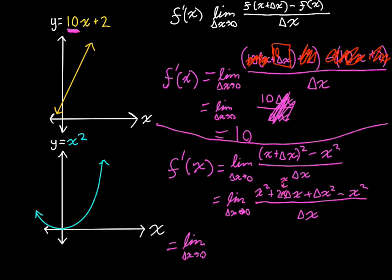But that's going to be the limit as delta x approaches 0. We still cancel these out, and one of these out, and these cancel out. We're going to have 2x plus delta x.